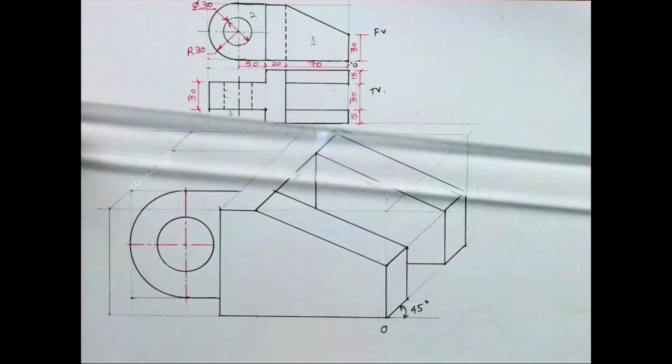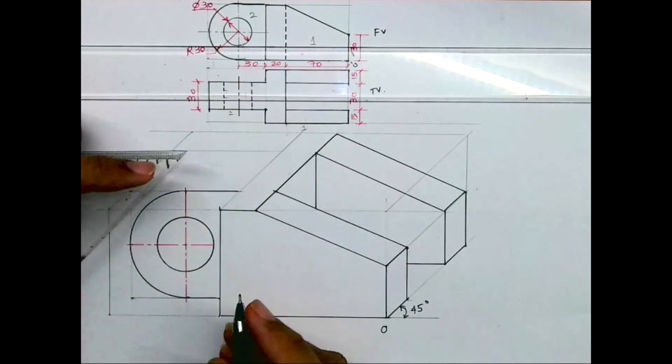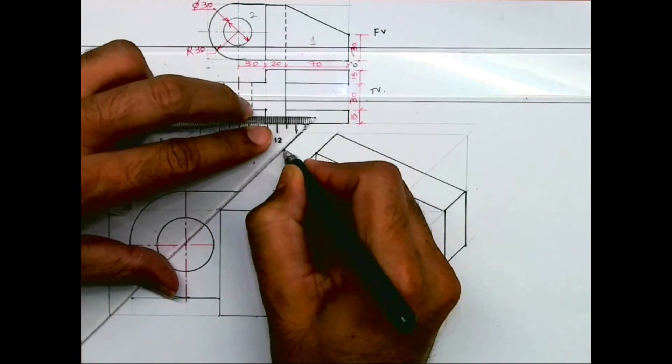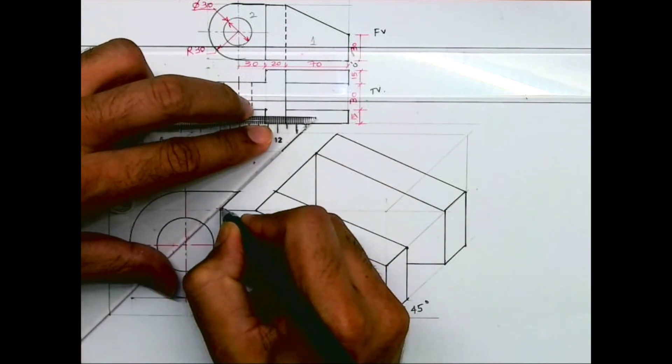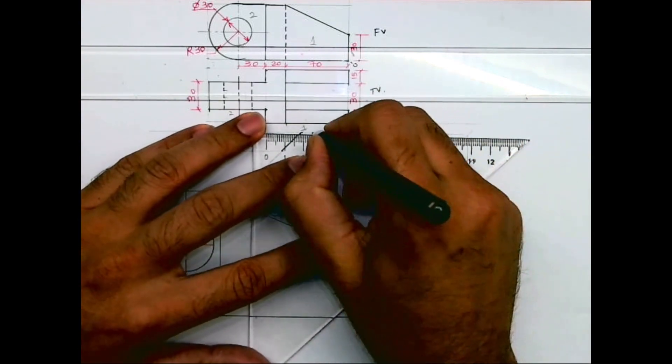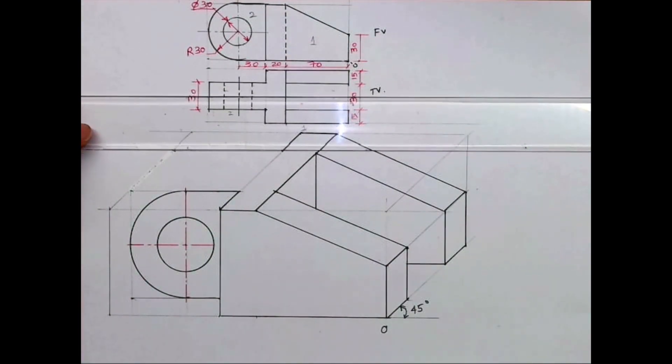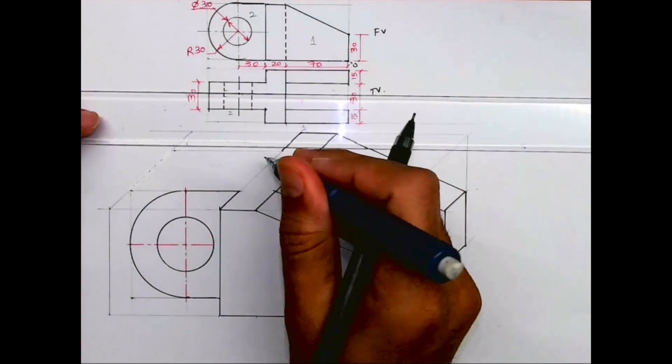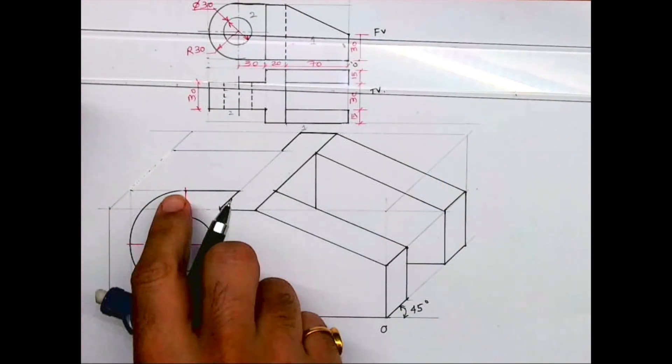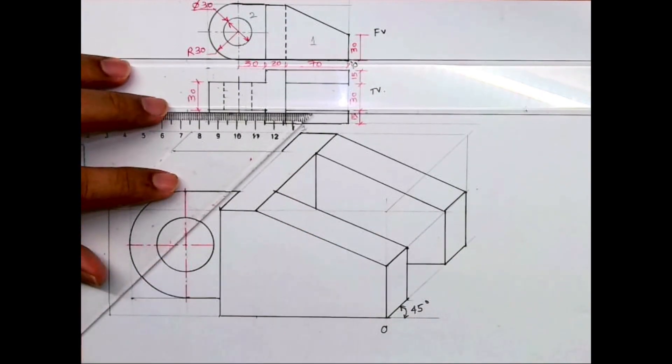After that, whatever is there in the front, the same thing is behind. Now see, this circle is behind also. So how much you have to go behind? We have to go behind by 30.